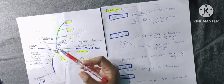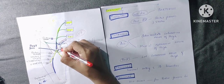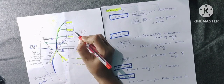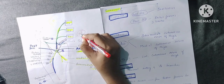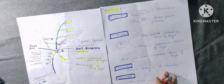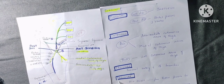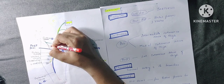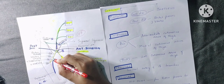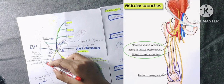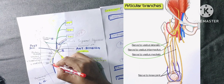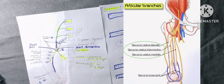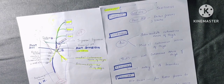Vascular branches supply the femoral vessels. The articular branch to the hip joint comes from the rectus femoris branch. The articular branches to the knee joint come from the three vastus muscles — vastus lateralis, vastus intermedialis, and vastus medialis — supplying the knee joint directly.